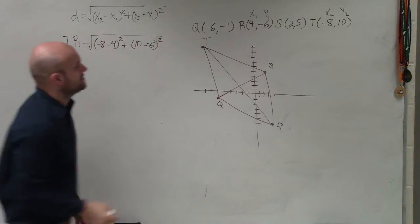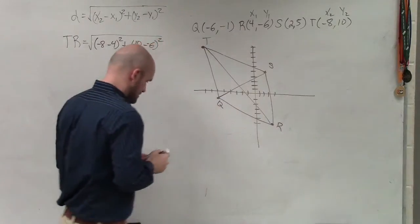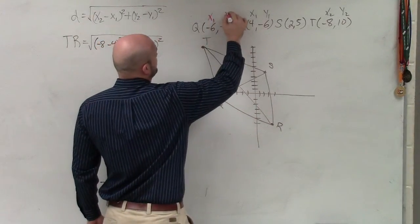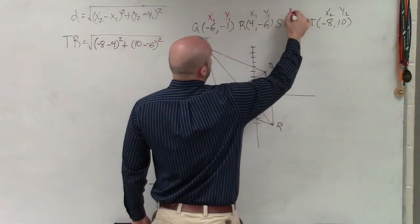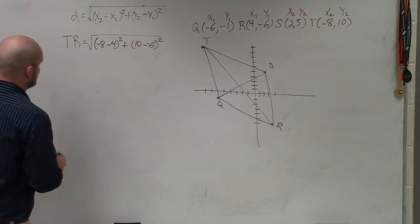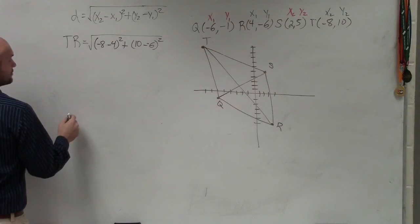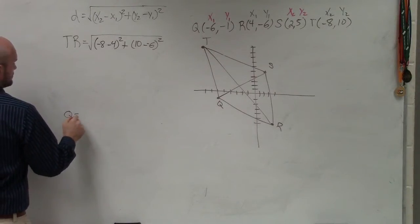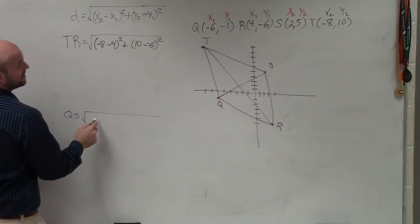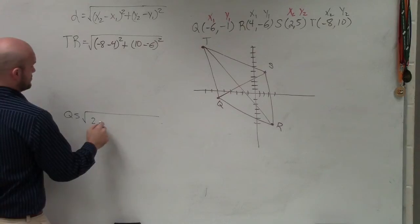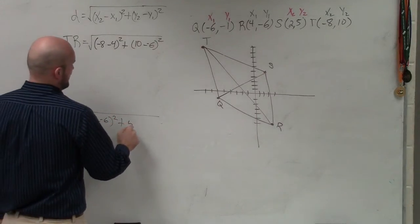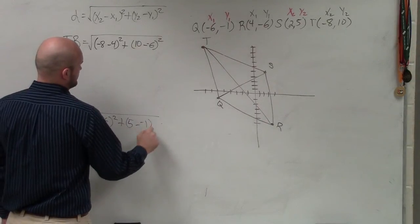Then I now need to find the distance between Q and S. So I'll label those differently. I'll label that x1, y1, x2, y2. So then we go QS. And QS is going to be (2 - (-6))² + (5 - (-1))².